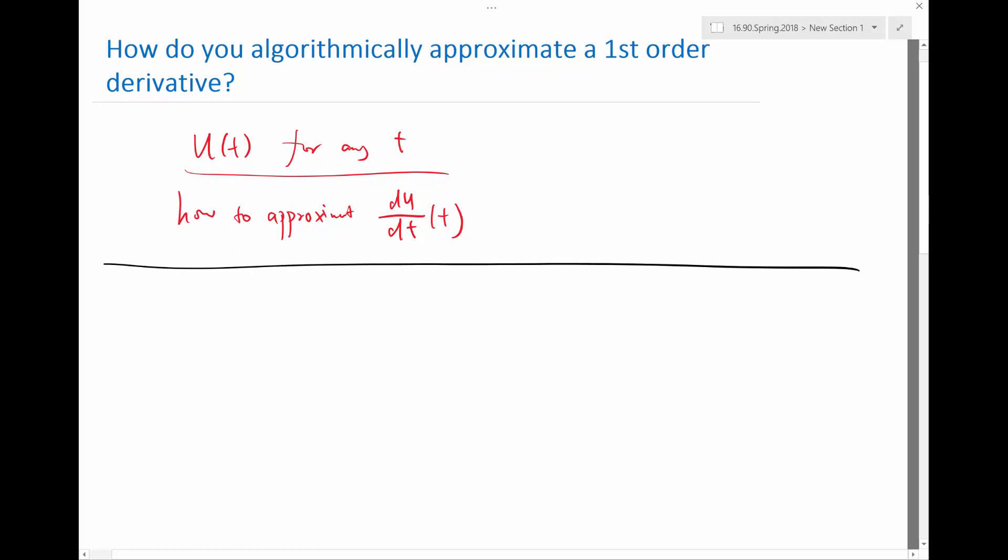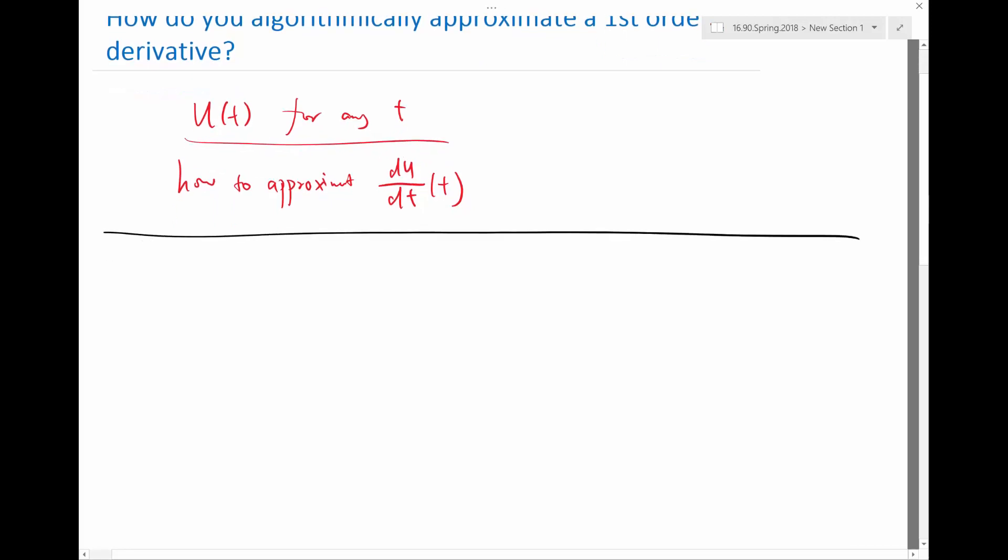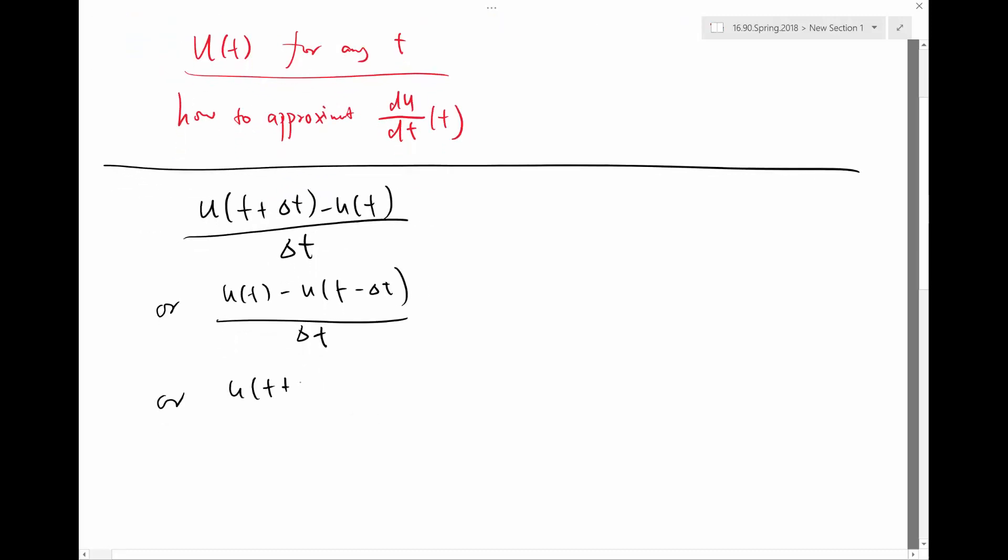Okay, so this is one, this is from Maya and Chloe. So there are three formulas they came up with. One is u(t + δt) - u(t) divided by δt. Or it's u(t) - u(t - δt) divided by δt. Or it's u(t + δt) - u(t - δt) divided by 2δt.